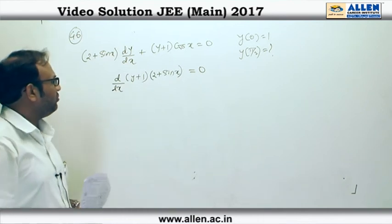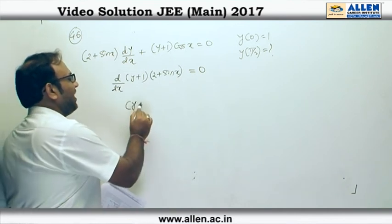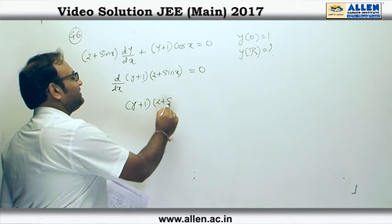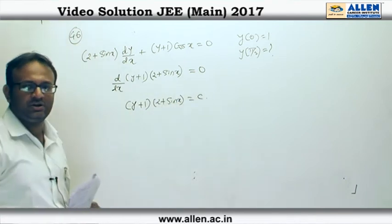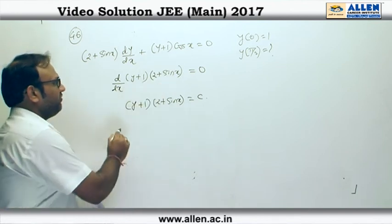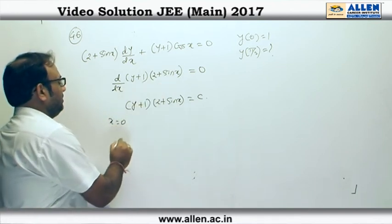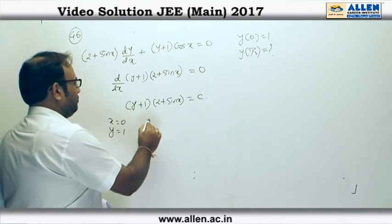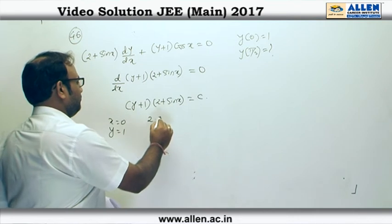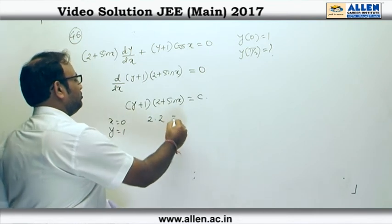Now, if we integrate on both sides, we have (y+1)(2+sin x) equals c, where c is a constant of integration, and for that we are given the initial condition. So if I put x=0 and y=1 into this, I have 2×2 equals c.